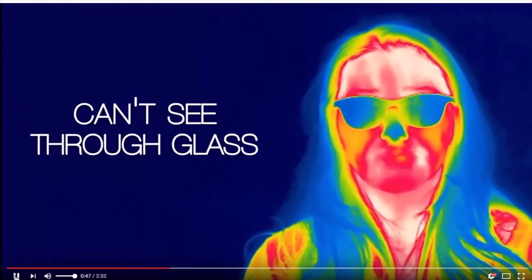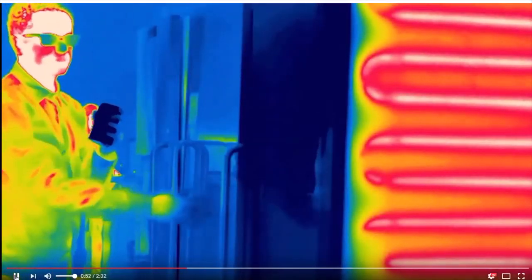It's blocked by glass. The face is hot. The inside of a fridge is cold, but the back of the fridge is very hot and therefore glowing like crazy.